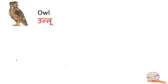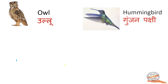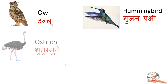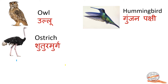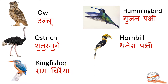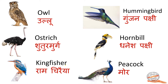Owl — Ullu. Hummingbird — Gunjan Pakshi. Ostrich — Sutramur. Hornbill — Dhanesh Pakshi. Kingfisher — Ram Chiraya. Peacock — Moor.